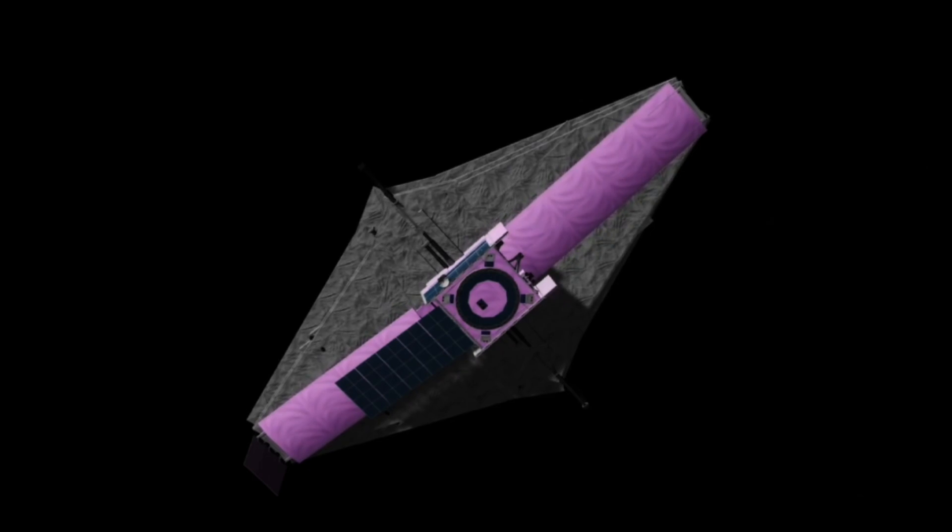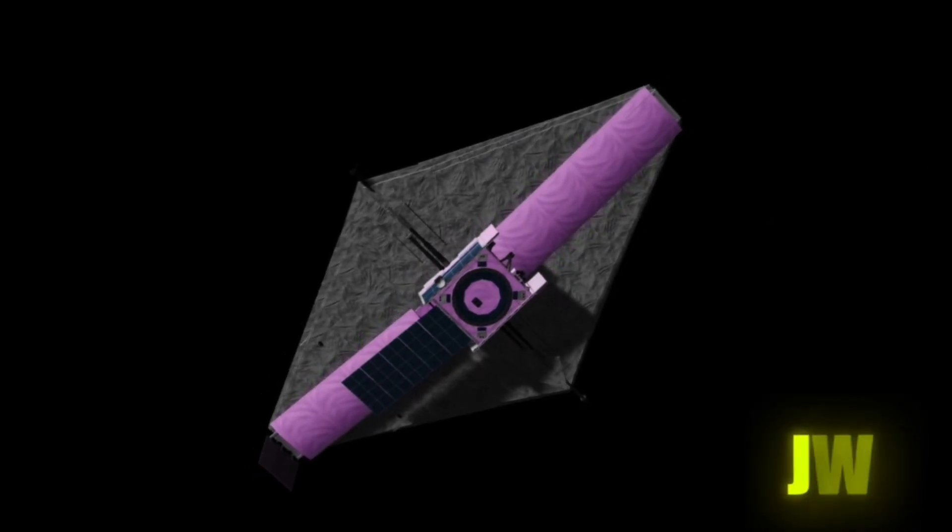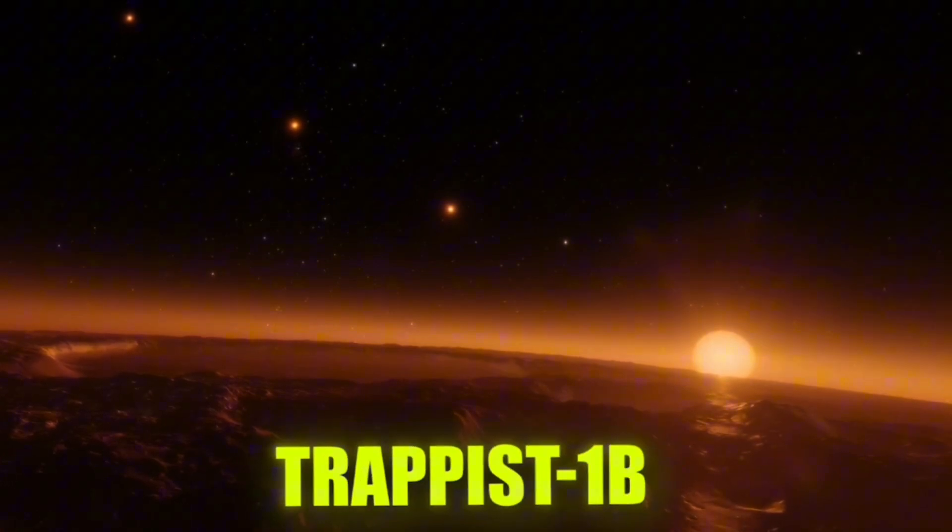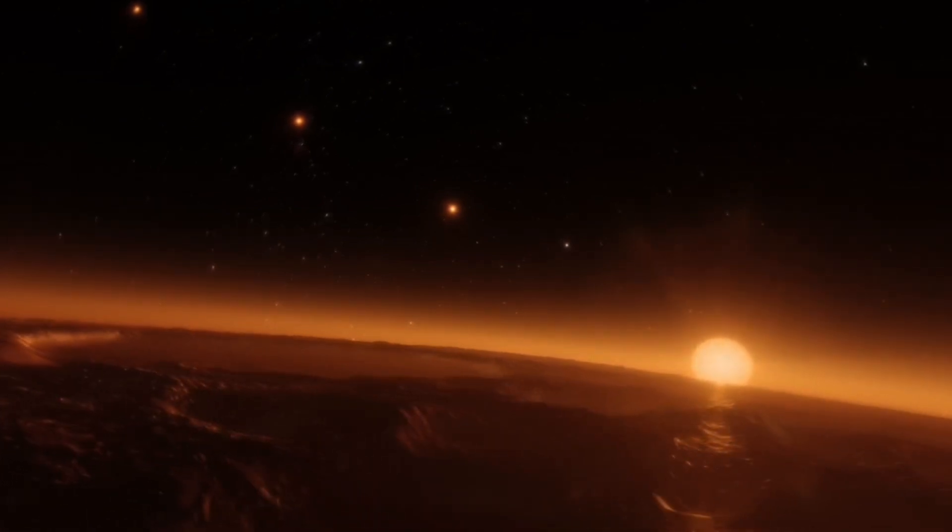Recently, NASA's advanced James Webb Space Telescope, JWST, measured the temperature of one of these planets, TRAPPIST-1b, as detailed in new research.